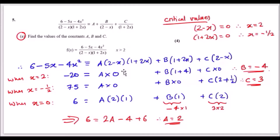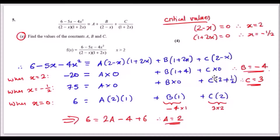Using the other critical value x equals minus half, the left-hand side becomes 7.5 or 15 over 2. Plugging in minus half makes the second term zero, and the a and b terms vanish too. Putting minus half here gives 2 plus half which is 5 over 2. You just solve for c: 7.5 equals c times 5 over 2, and dividing gives c equals 3.